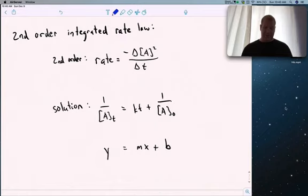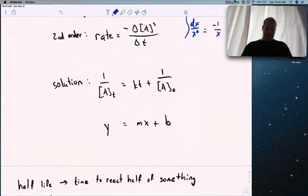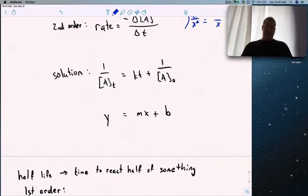Second order integrated rate law. I'm not going to prove this. The solution is 1 over concentration of A equals kt plus 1 over initial rate. When you have dx over x squared, the integral is minus 1 over x. You don't have to know calculus, just how to use it. I will provide you with all the equations.